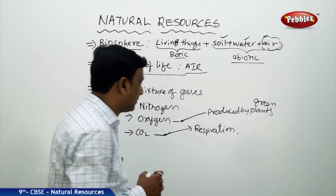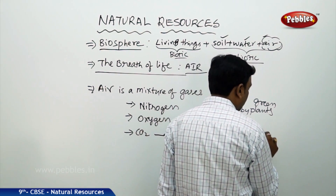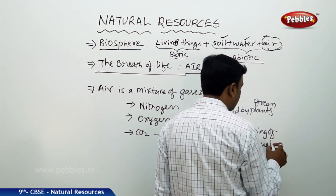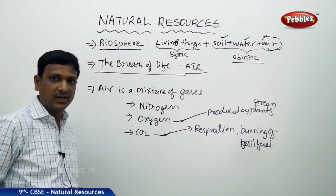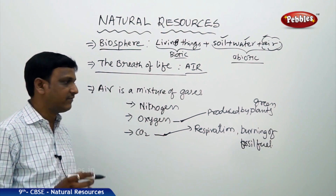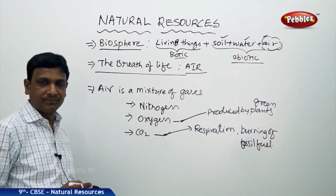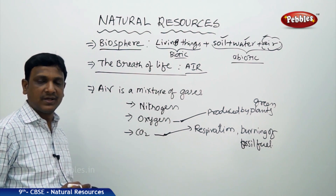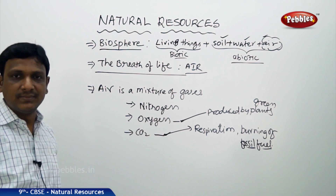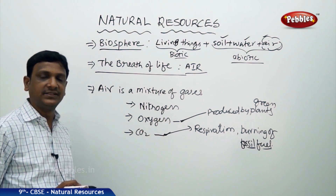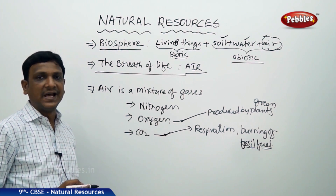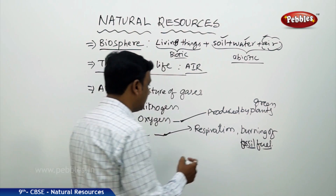At the same time, carbon dioxide is also produced by the burning of fossil fuels. When you burn wood, paper, cloth, coal, petrol, diesel, kerosene, oil — whatever materials you burn, carbon dioxide is released. Fossil fuels such as coal and petroleum are burnt in factories, generators, and motor vehicles for mechanical work, and when these fuels are burnt, CO2 is released into the atmosphere.